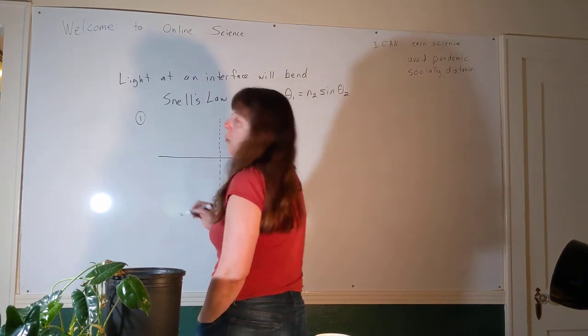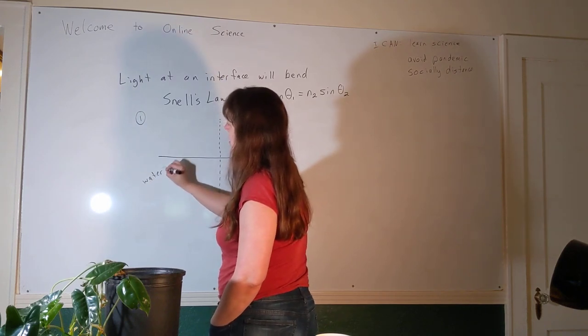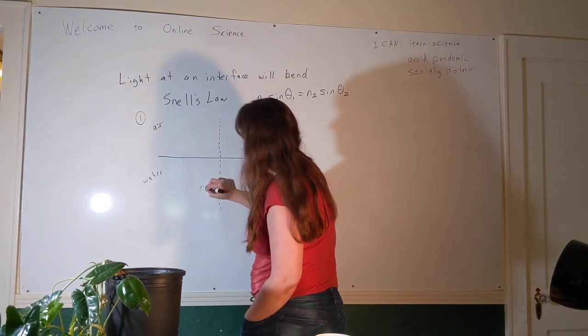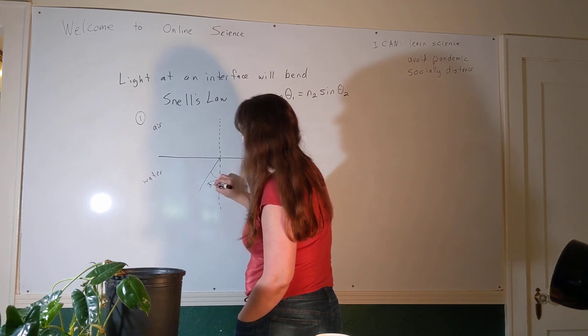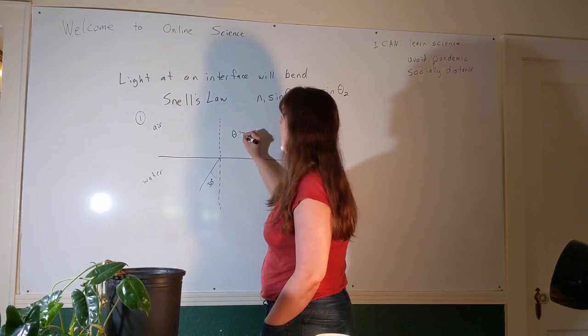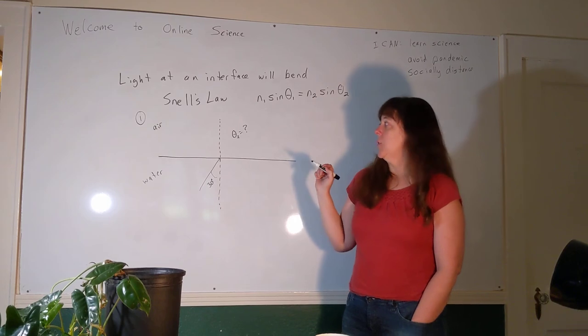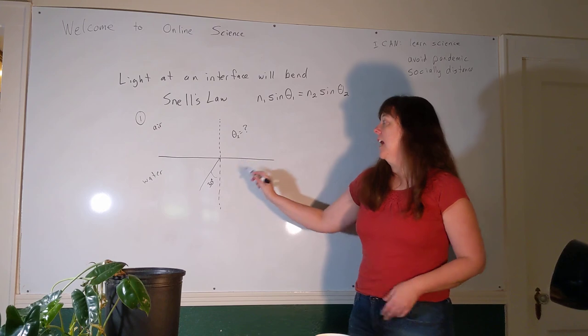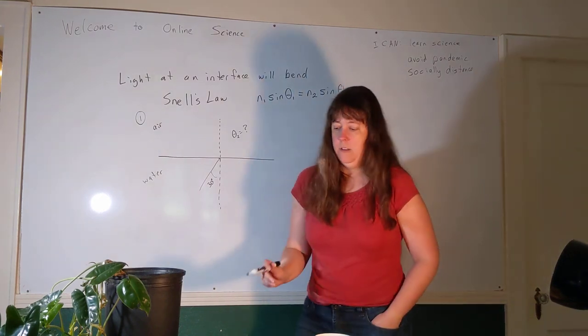Here's problem one for your viewing quiz. This time I'm going to have my light start in the water and go into the air. I'm going to have my light start in the water with an angle of 30 degrees, and I want to know what the theta 2 is in air. So that's question one: when a light ray goes from water into air starting out at an angle of 30 degrees, what will the refracted angle be in air?